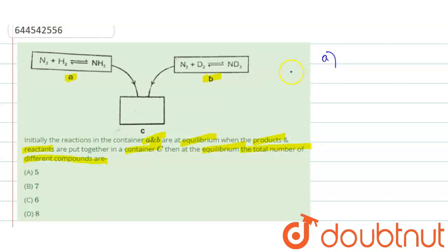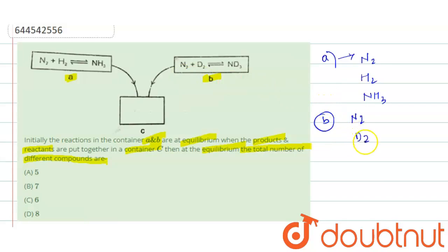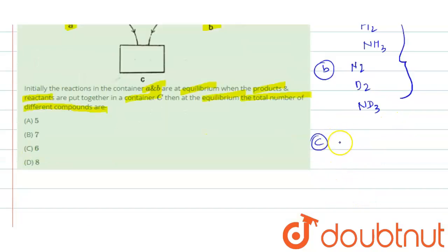In container A, the reaction is N₂ + H₂ → NH₃, and in container B, N₂ + D₂ → ND₃. Let us write the different compounds: in container A, N₂, H₂, and NH₃ are present. In container B, N₂, D₂, and ND₃ are present.